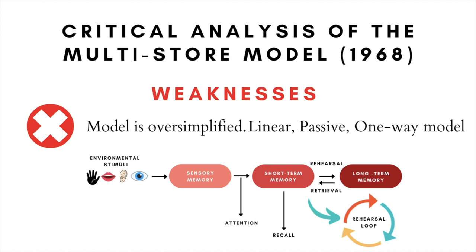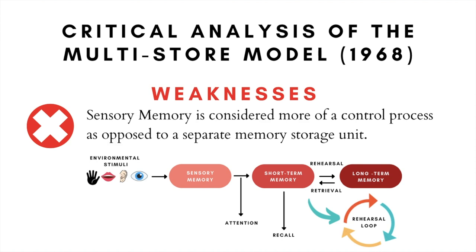In terms of weaknesses, this model has been referred to as an oversimplified, linear, passive, one-way model that fails to capture the complexity of information passage during memory storage. Specifically, the suggestion that both long- and short-term memory operate as two single units in a uniform fashion has been called out as a key weakness. Furthermore, one early criticism targeted the inclusion of sensory memory as a separate unit; parsimoniously, the sensory memory acts more like a control process — a sensory register — rather than a distinct structure as the original model proposed.